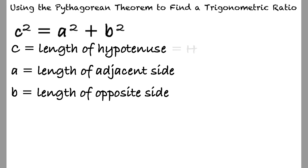We can also replace c with h to represent the hypotenuse, and replace b with o to represent the opposite side.